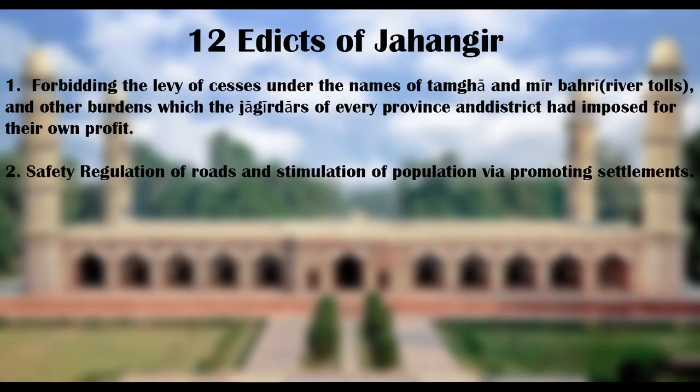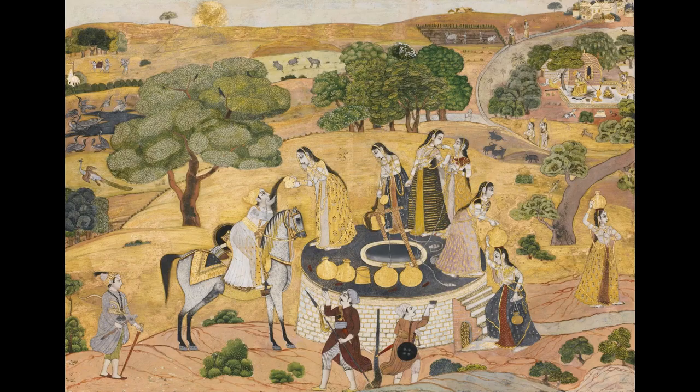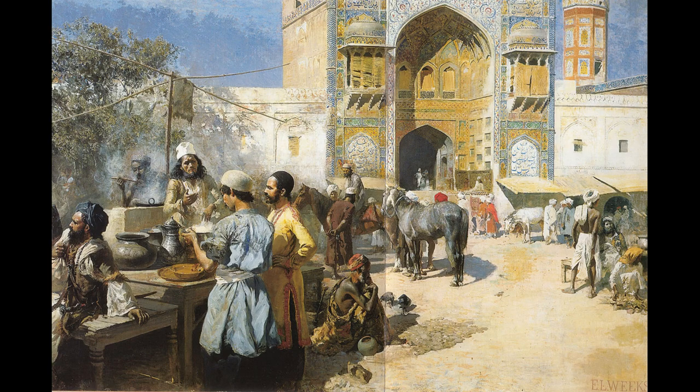2. Safety regulation of roads and stimulation of population via promoting settlements. This order enforced the Jagirdars to build Sarais or public rest houses, mosques, and dig wells in those neighbourhoods where road thefts and robberies took place, which were at a little distance from habitation. This in turn stimulated population and allowed people to settle down in those Sarais or public houses. If these were near a Khalisa state, that is under direct state management, the administration of that place was supposed to execute the work.